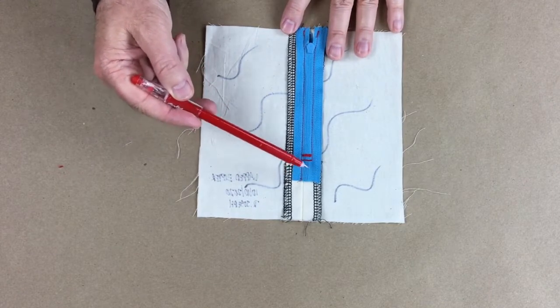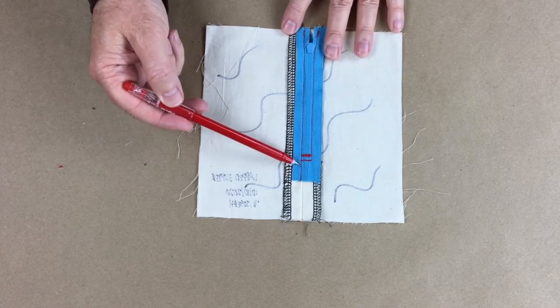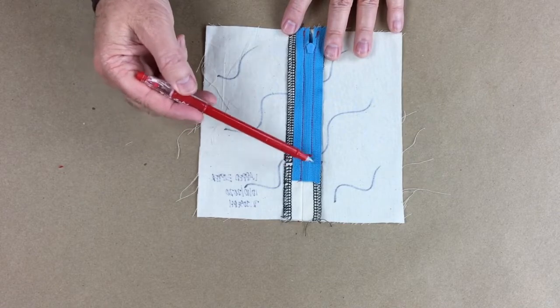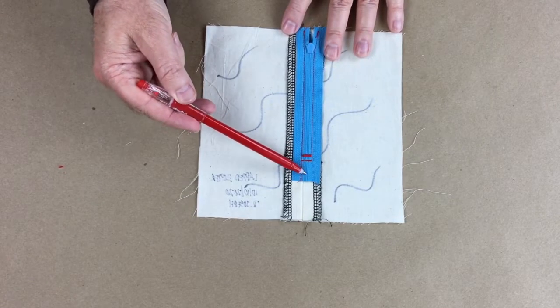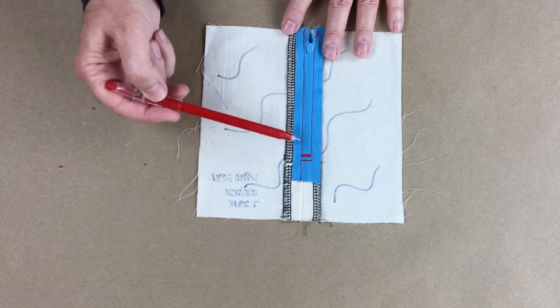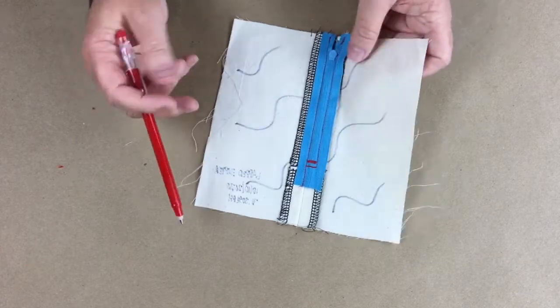If you forget how to shorten it, go back to level one and check out the railroad, because I explain how to shorten the zipper. So what I'm going to be looking for first of all is the quality of the stitching.